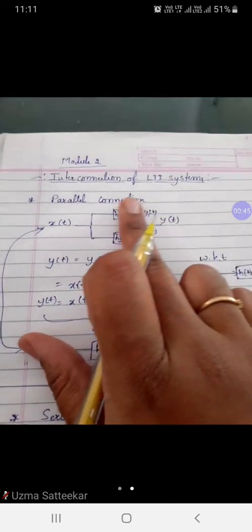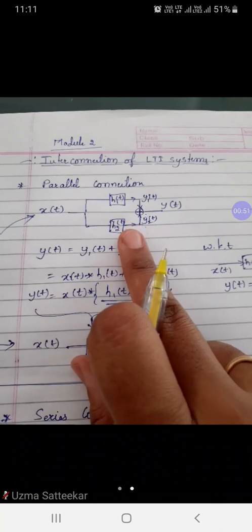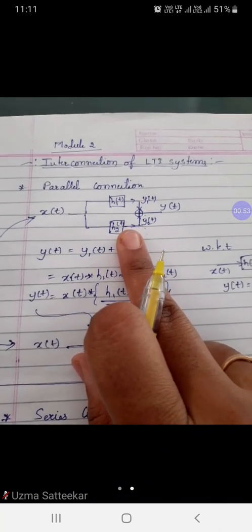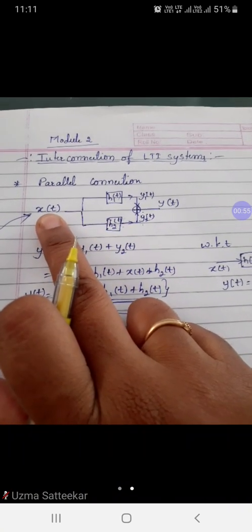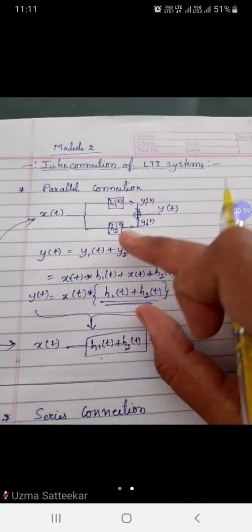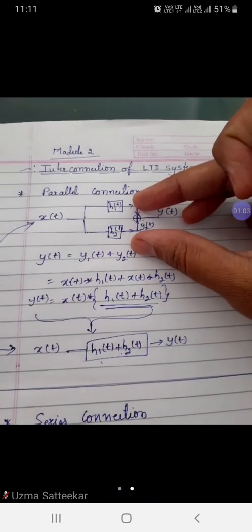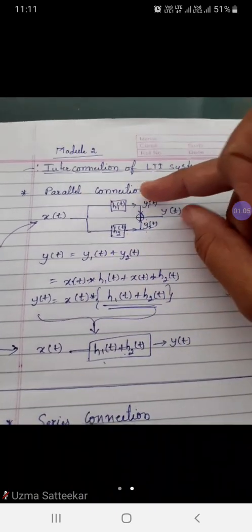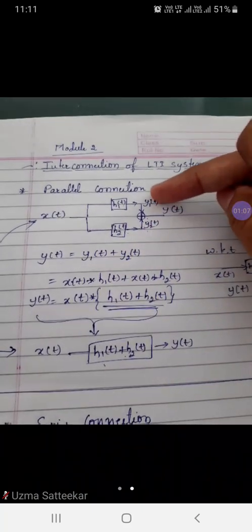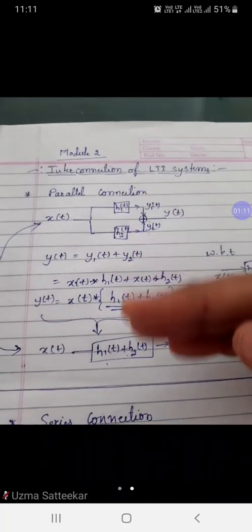This kind of system has been dealt with while discussing one of the properties of convolution, where x(t) is the input, y(t) is the output, and you have two different impulse responses h1 and h2 connected in parallel. If this is given to you, how can we reduce it? How can we interpret this block?